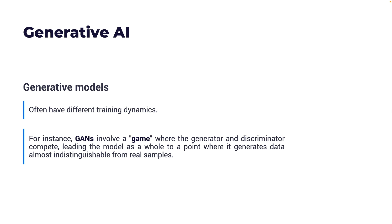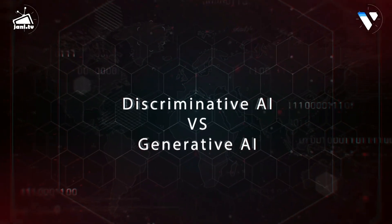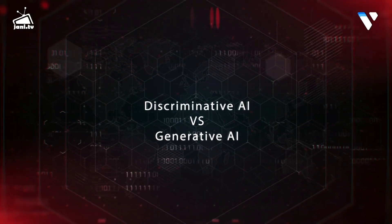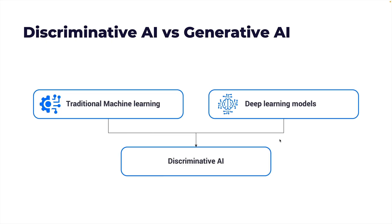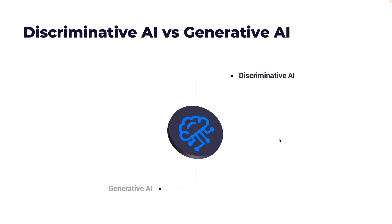Now let's take a closer look at Discriminative AI versus Generative AI. Traditional machine learning and deep learning models are categorized as Discriminative AI. They typically deal with models that discriminate the input data, as opposed to Generative AI that generates new data similar to the input. Discriminative AI and Generative AI are two sides of the machine learning coin, each with a distinct approach and set of applications.